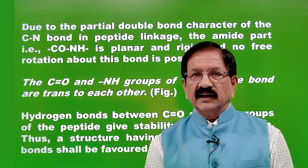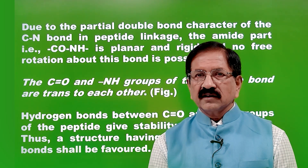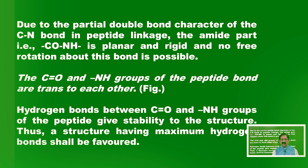The result is that the C-N bond has double bond character. This double bond character causes geometric isomerism, so the CO group and NH group are always in transposition to each other. Hydrogen bonding gives stability to the polypeptide chain, making the structure more stable.